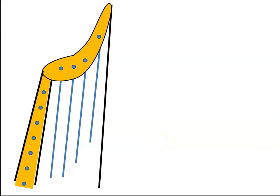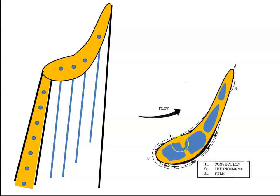With turbine blades there are three methods of cooling: convection, impingement, and film cooling.